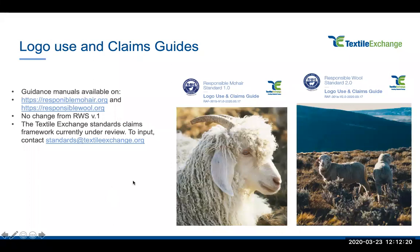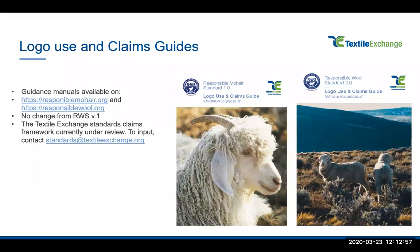We have issued a logo use and claims guide for the Responsible Mohair Standard and updated the Responsible Wool Standard logo use and claims guide to reflect the Responsible Animal Fibers policy. These guidance manuals are available on the website. The only change is the addition of a reference to the Responsible Animal Fiber Standard. We are also working on a claims framework review at Textile Exchange, which may have an impact on our approach in the future. Those interested are encouraged to get in touch to give feedback and be involved.